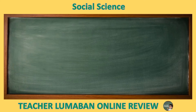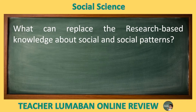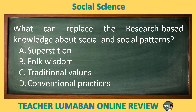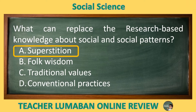What can replace research-based knowledge about social patterns? Letter A: Superstition. Letter B: Folk wisdom. Letter C: Traditional values. Letter D: Conventional practices. The correct answer is Letter A, Superstition. Research-based knowledge about social patterns can replace superstition.